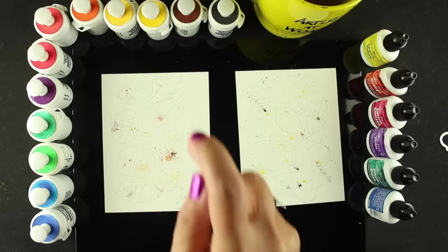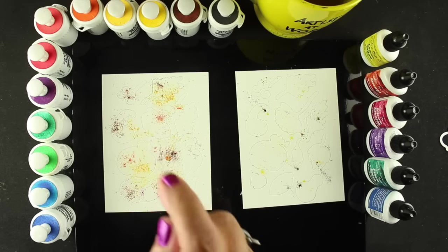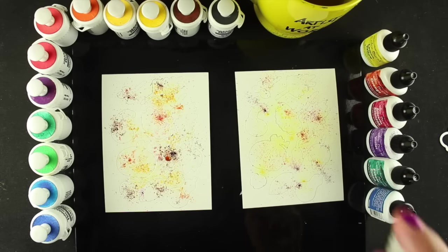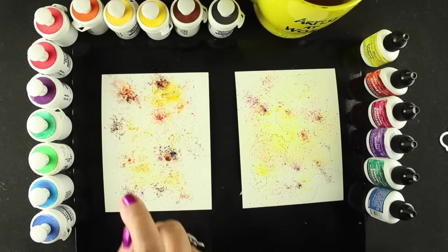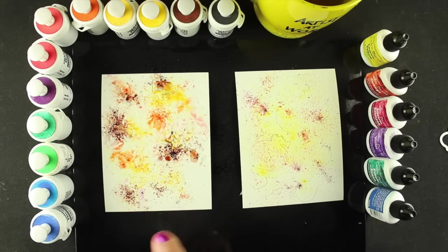So if I spritz these from way high up, I'm several inches away from the paper, then I get this really polka dotted kind of a look with just little tiny stippling of colors. And that is a really great way to go.